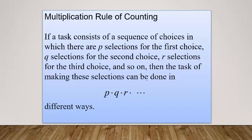So what exactly is the multiplication rule of counting? If a task consists of a sequence of choices in which there are P selections for the first choice, Q selections for the second choice, R selections for the third choice and so on.